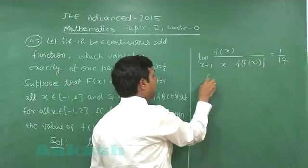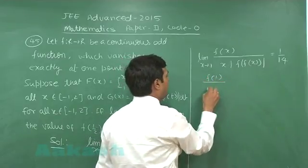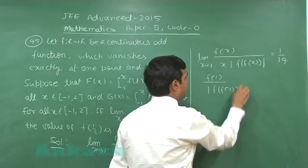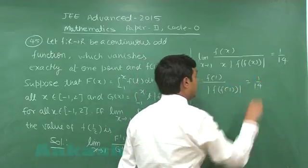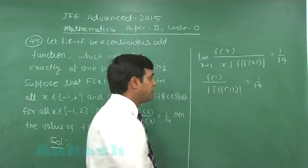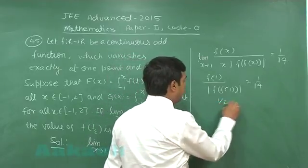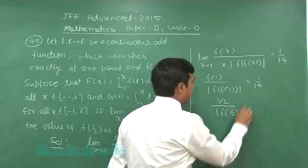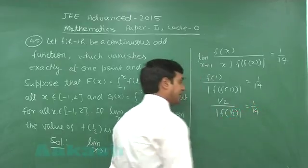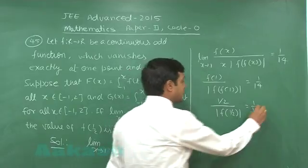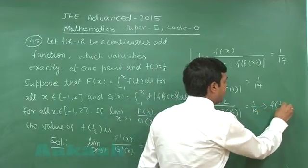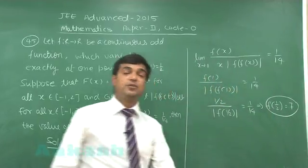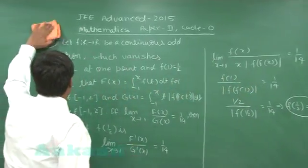Now, on substituting limit, we have f 1 upon 1 mod f of f 1 is 1 by 14. f 1 is given to me half. So, it is half divided by mod f of half is equal to 1 by 14. So, we observe here simply f half comes out as 7, right? Let us go for the next one.